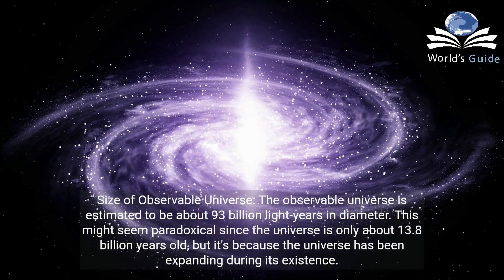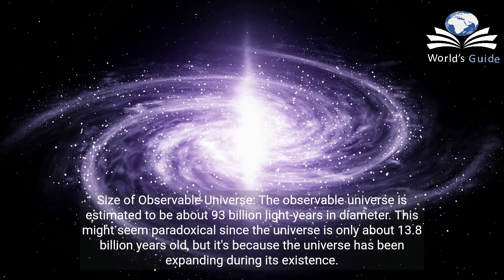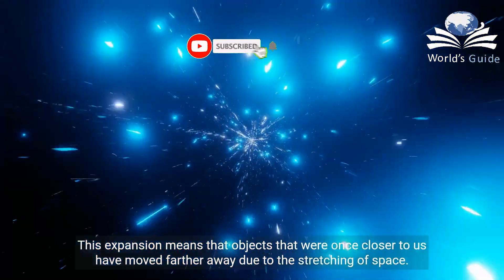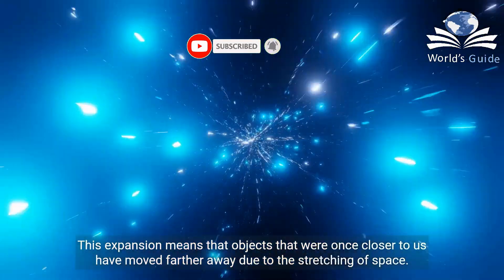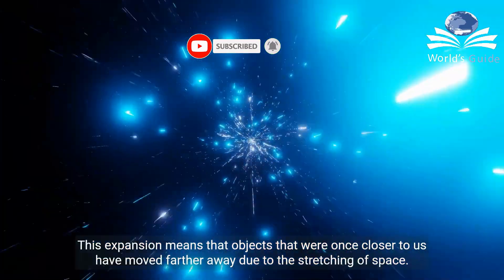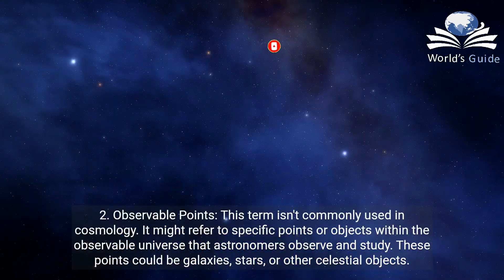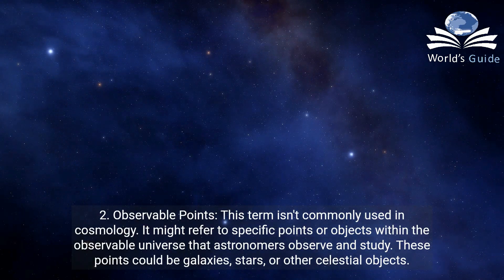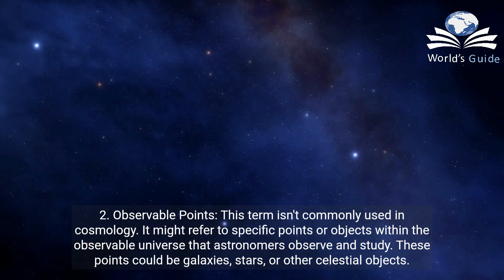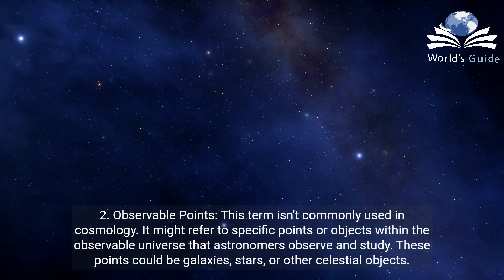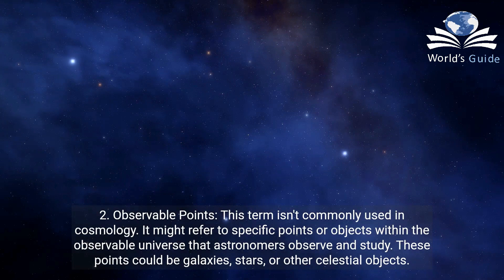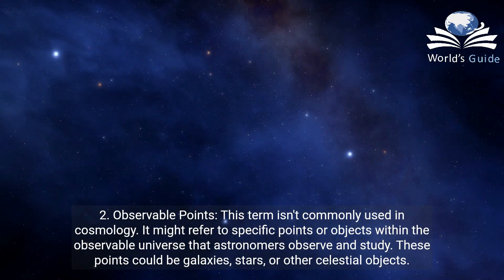This might seem paradoxical since the universe is only about 13.8 billion years old, but it's because the universe has been expanding during its existence. This expansion means that objects that were once closer to us have moved farther away due to the stretching of space. Two: observable points. This term isn't commonly used in cosmology. It might refer to specific points or objects within the observable universe that astronomers observe and study — such as galaxies, stars, or other celestial objects.